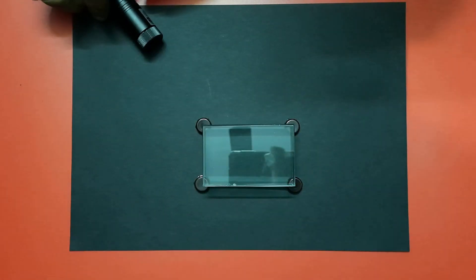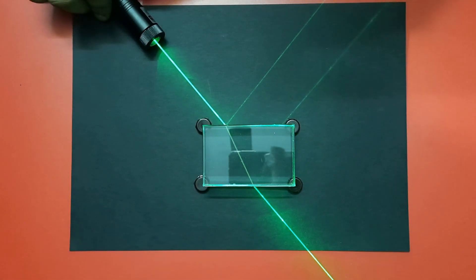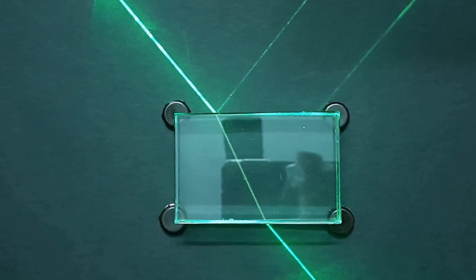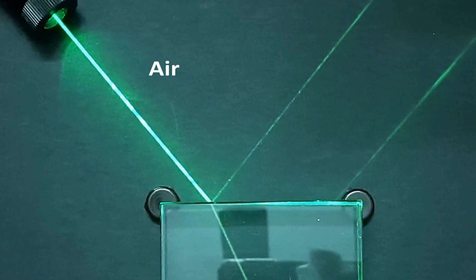Let's now understand the phenomenon of refraction deeply. Here we have two different media in which light is traveling: air and glass. In air the speed of light is high, very close to its maximum speed in vacuum.